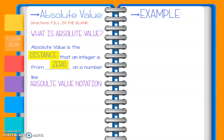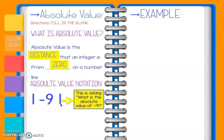So when we're talking about absolute value, our answers are going to be positive. When we look at absolute value notation, we learned in class that we don't always write out all those words — 'what is the absolute value of?' Most of the time we're going to see it written in these bars, and we have to know that those bars are saying: what is the absolute value of negative 9?